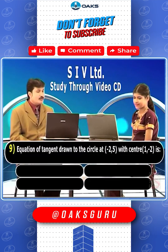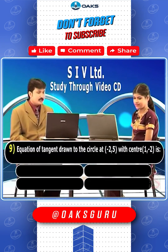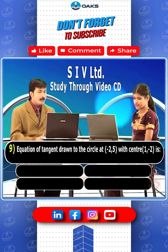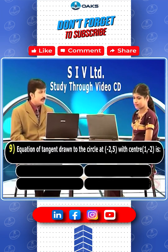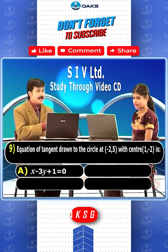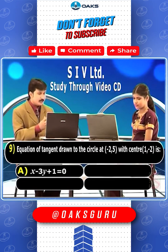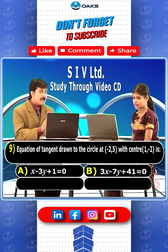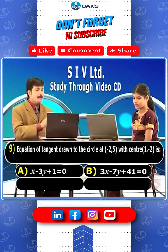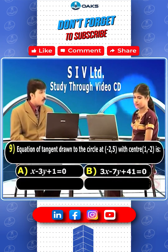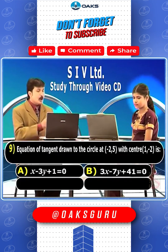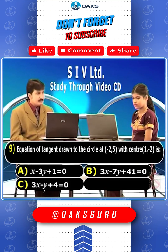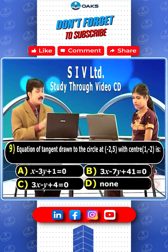Equation of tangent drawn to the circle at a given point. Option A: x minus 3y plus 1 is equal to 0. Option B: 3x minus 7y plus 41 is equal to 0. Option C: 3x minus y plus 4 is equal to 0. Option D: none.